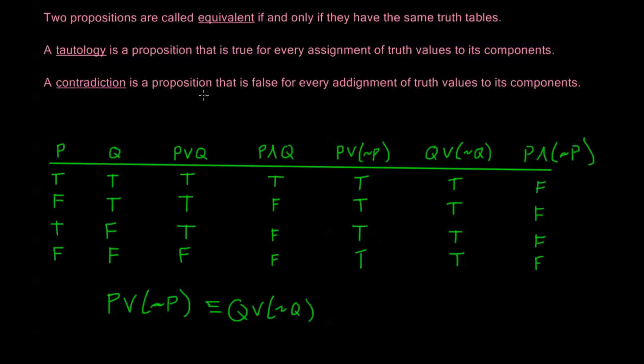Complementary to that, we have a contradiction, which is a proposition that is false for every assignment of truth values to its components. For example, this last column, this P and not P, this is what we call a contradiction. It's something that's never true. We can never have both P and not P. That's the logical definition of what a contradiction means.